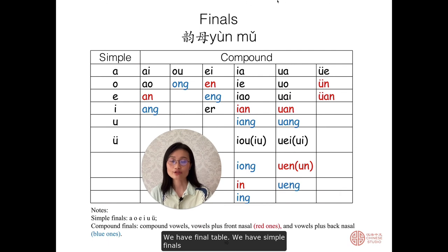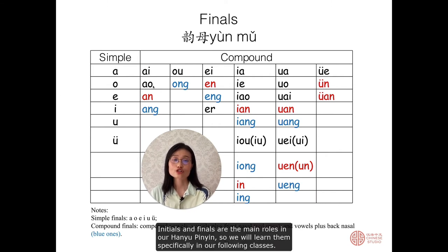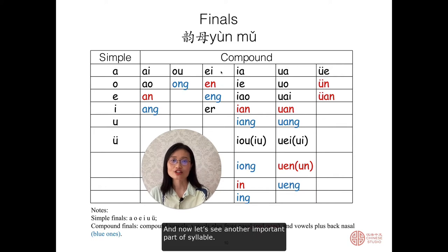Here is the final table. We have simple finals: a, o, e, i, u, ü. We also have compound finals. Initials and finals are the main roles in pinyin, and we will learn them specifically in our following classes. Now let's see another important part of the syllable.